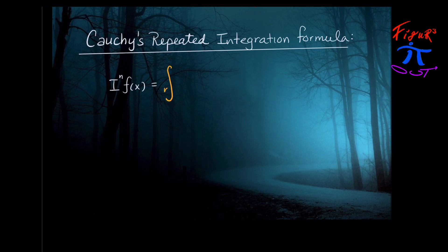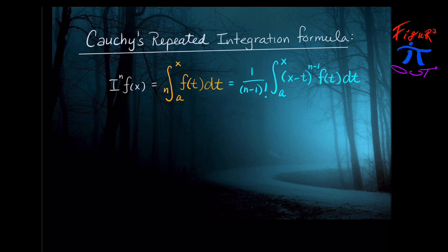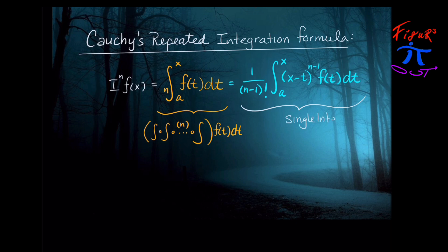Cauchy's formula states that our n-th integral, which can be denoted in shorthand, is really equal to 1 over (n−1)-factorial times the integral from a to x of (x−t) to the (n−1) power times f of t dt. The shorthand notation represents n composed integrals, but we'd rather use the formula on the right-hand side because it's actually just the evaluation of a single integral that does the job of many.